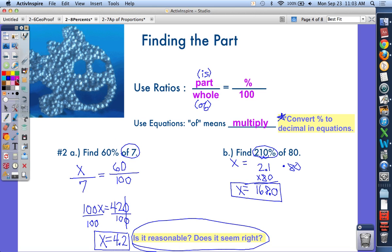On all these problems, ask yourself: is it reasonable? Does it seem right? 60% of 7—well, 60% is a little more than half. Half of 7 is 3 and a half. Is this a little more than 3 and a half? Yeah, that makes sense. I'm verifying it could possibly be true. 210% of 80—100% of 80 would be 80, 200% would be double, so 160. Is this a little more than 160? Yeah, so it seems correct.